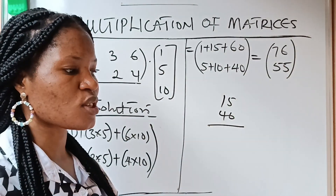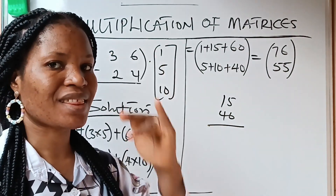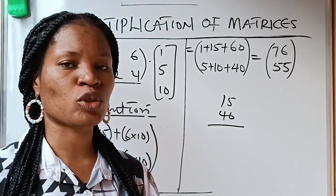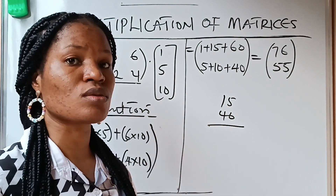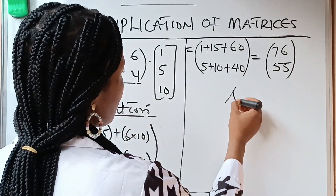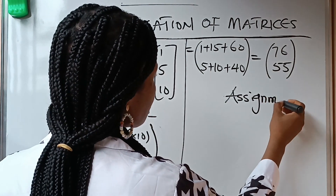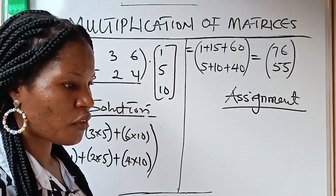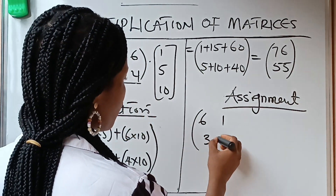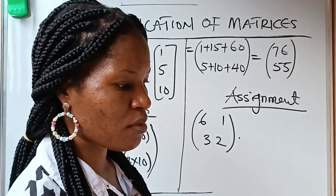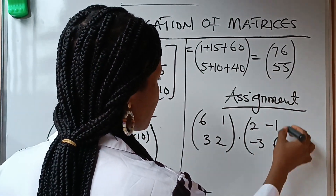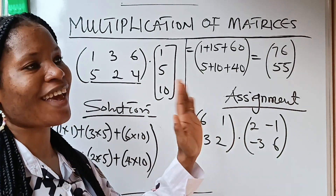In our next class, we are going to discuss multiplication of a 3 by 3 matrix — I want to treat that one separately because it is more tactical — and also how to get the determinants of a 3 by 3 matrix. Now I would like you to do this assignment: solve [6, 1; 3, 2] multiplied by [2, −1; −3, 6]. Thank you so much for watching. Do have a great day. Bye.